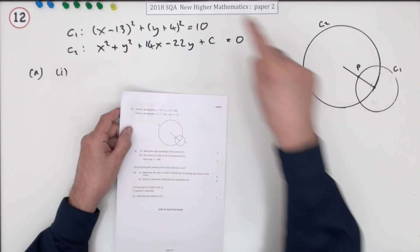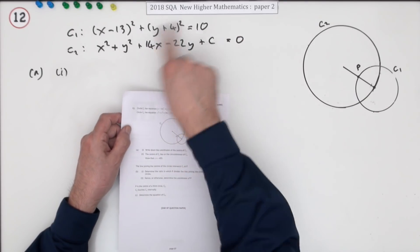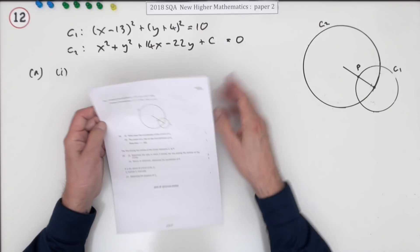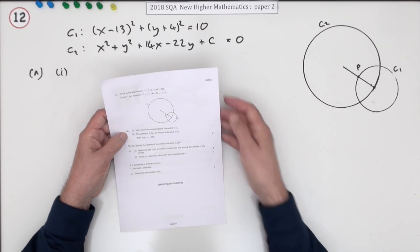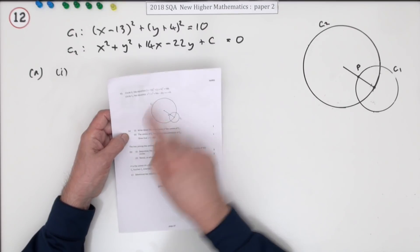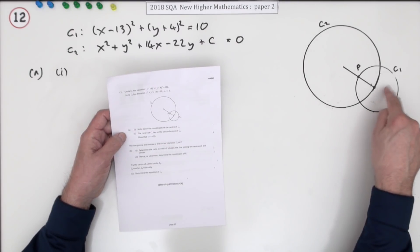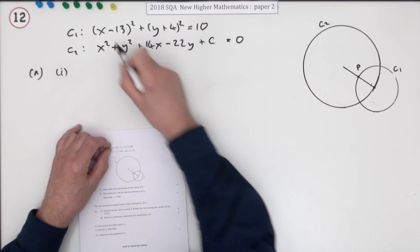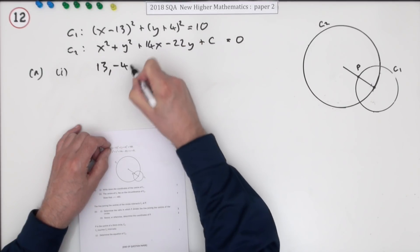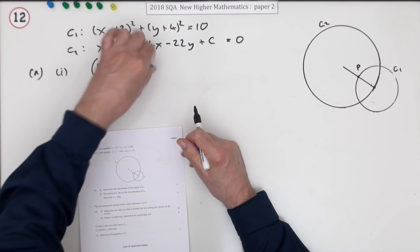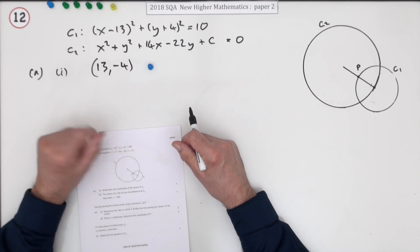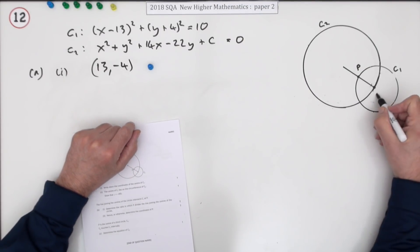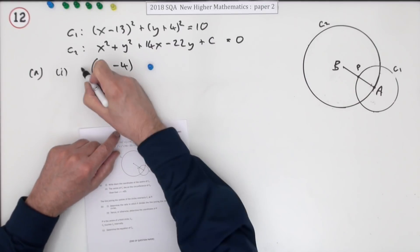There are two circles: a smaller circle C1 with this equation in the squared form, and a larger circle C2 in the expanded general form. For the first mark, you have to write down the coordinates of the center of C1. Just write it down, pick it out of the brackets what's being subtracted. It's 13 and negative 4. Don't forget to put it in brackets. I'll call that center A.